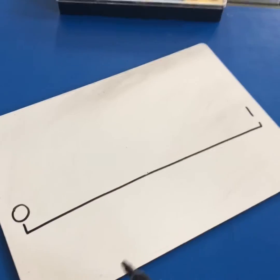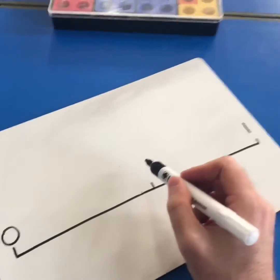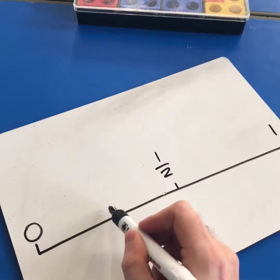For more abstract concepts, you can use an empty number line. So if you give them a number line and have zero to one, you could get them to plot fractions on this line where they think they go.